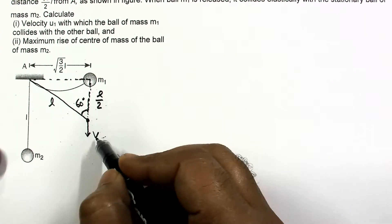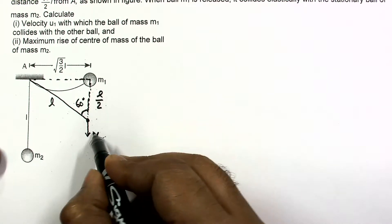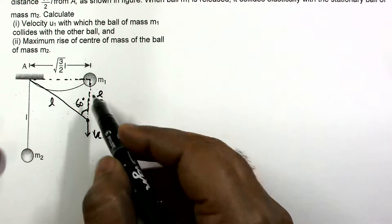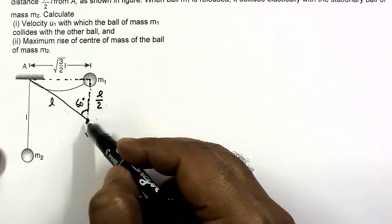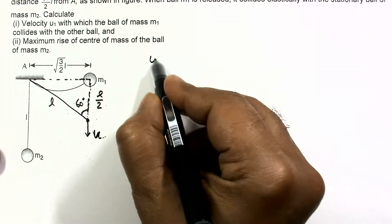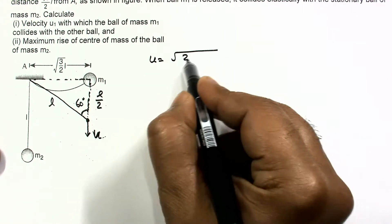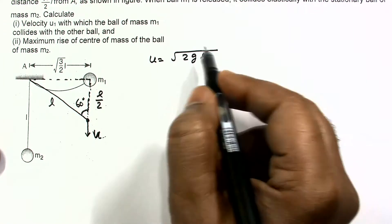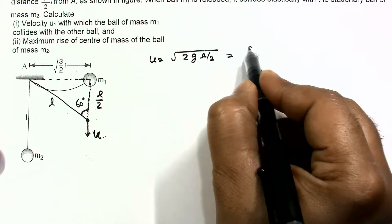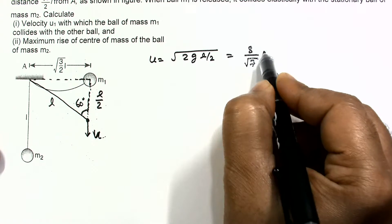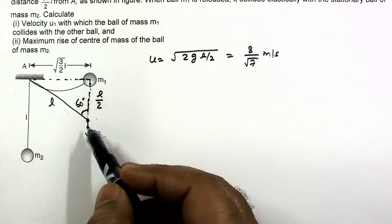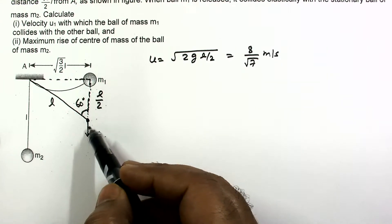We find the velocity at this moment using free fall: U = √(2gH), where H = L/2. Substituting the values of g and L, this gives U = 8/√7 m/s. Just after this moment, the string becomes taut.